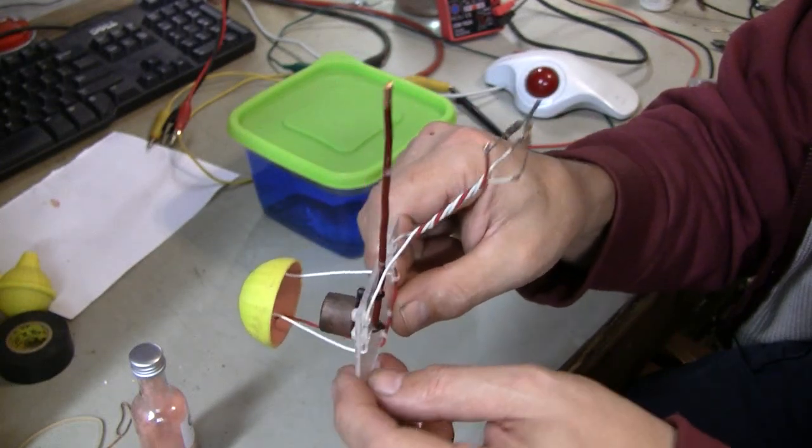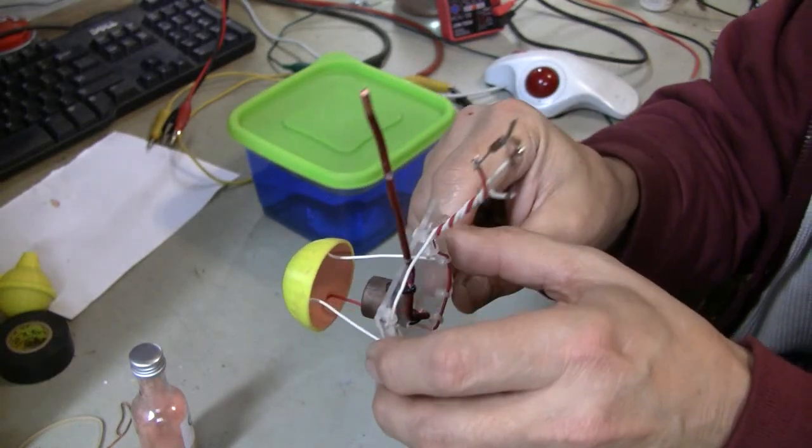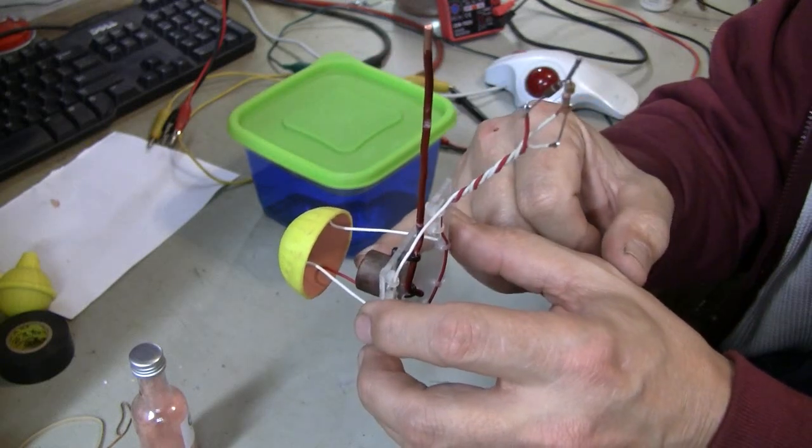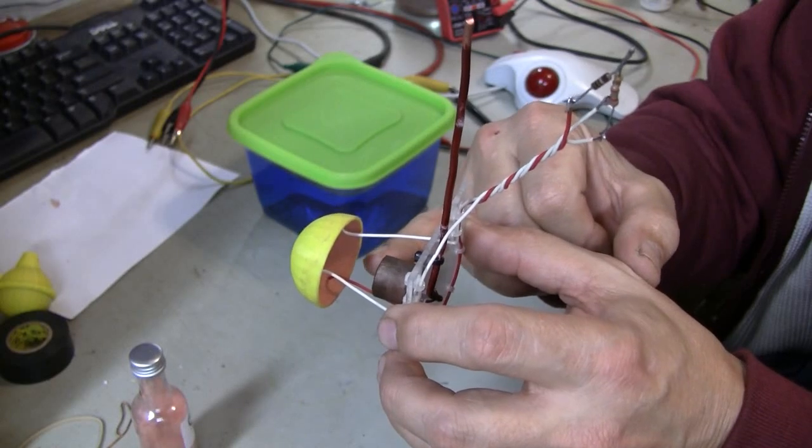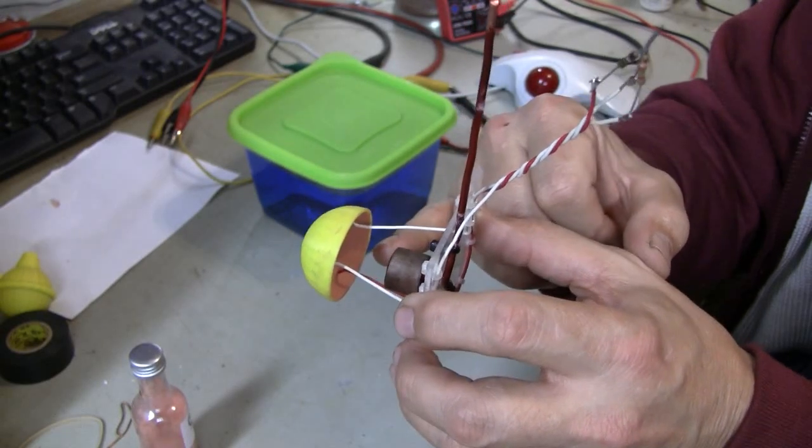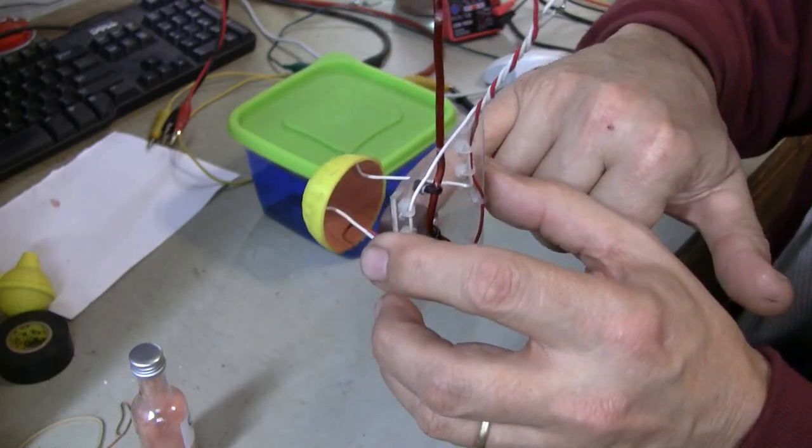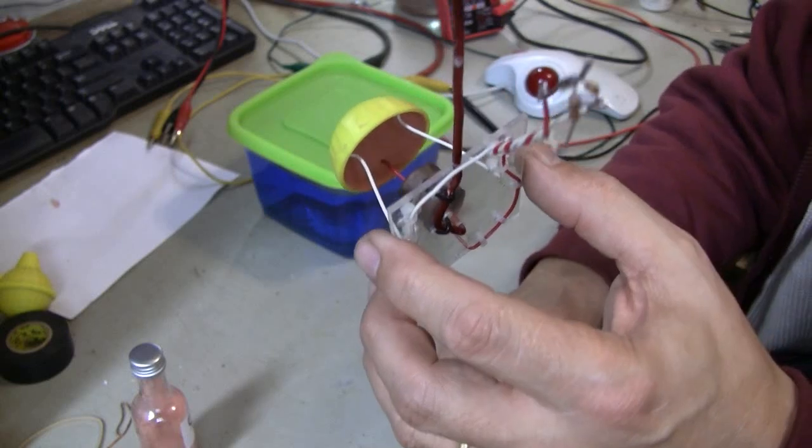So when you first start and you first apply the voltage, the only part that is really conducting in the plating solution is the very tip of the copper electrode until the copper plating starts to spread out between the particles that have been deposited on the inside of the half sphere.